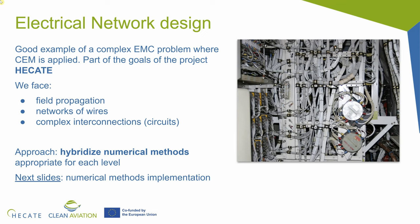Actually, the electrical networks in an aircraft is an example we will use to show how complex EMC problems can be treated numerically. This is a very interesting problem because we have different description levels: we are going to have field propagation to study interferences, we are going to have networks of cables and wires described by their voltages and currents, and then interconnections between these wires described by electronic signals. Solving and simulating this kind of problem is the goal of the University of Granada group within the project HIETE. In the next slides, we will see how we have described each level and how we have a hybridized model to solve this multilevel problem.